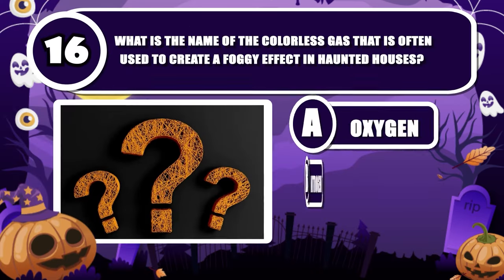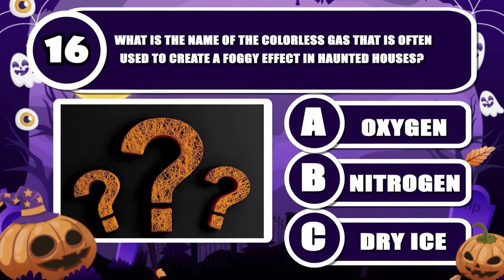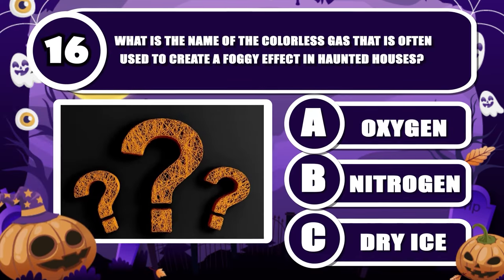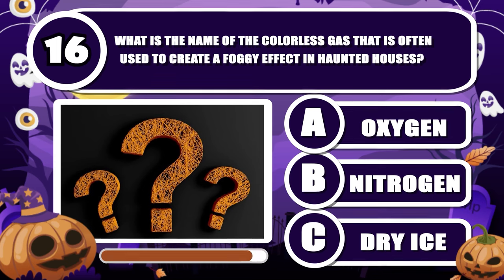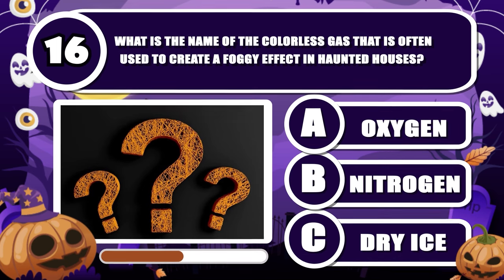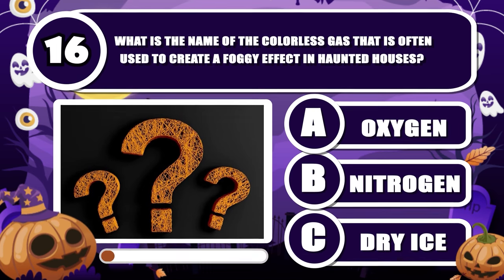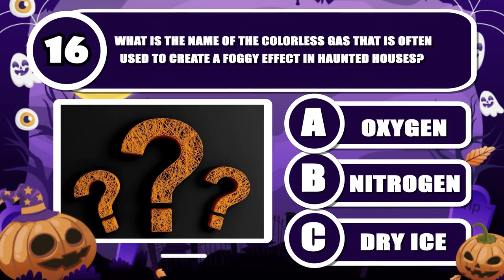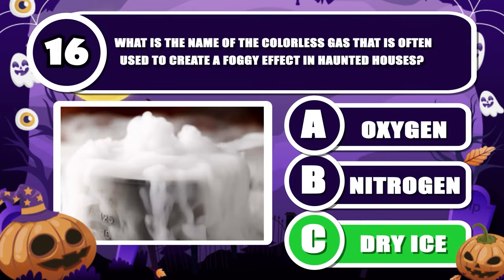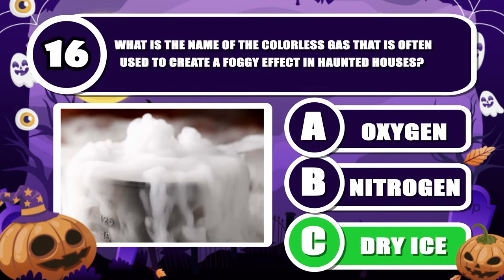What is the name of the colorless gas that is often used to create a foggy effect in haunted houses? The correct answer is dry ice.